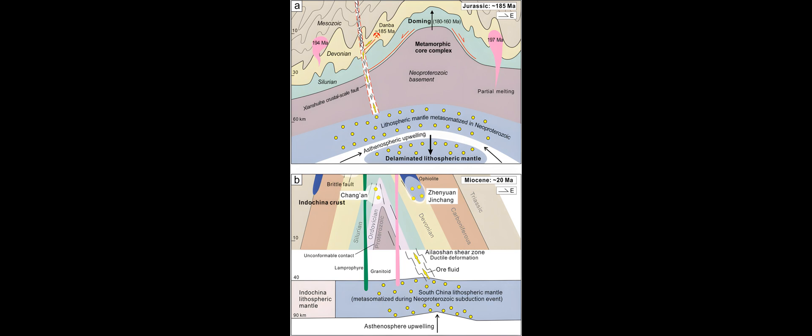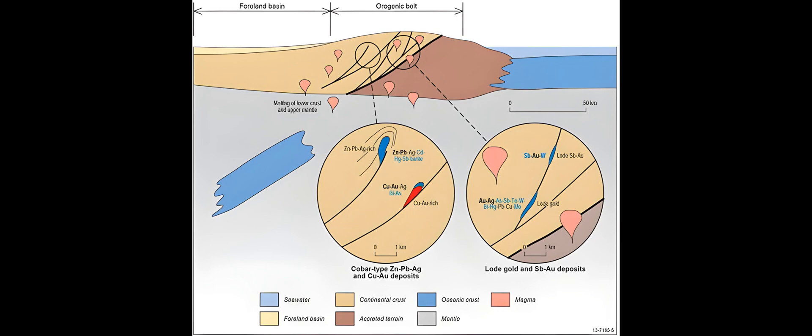Orogenic gold deposits were only formed in certain time slices of Earth's history. Orogenic gold deposits are mainly concentrated in three epochs of Earth history. The time-bound nature of many mineral deposits reflects the breakup or formation of supercontinents, which most likely also applies for orogenic gold deposits.